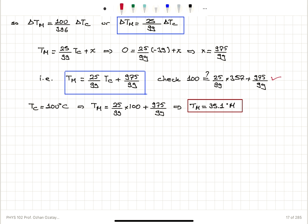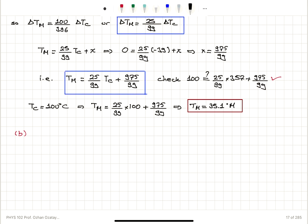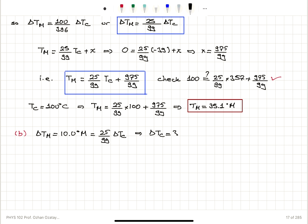For Part B, we want to know what temperature change of 10 degrees M corresponds to in degrees Celsius. Using the temperature change conversion, delta T_M of 10.0 degrees M equals (25/99) times delta T_C. Solving for delta T_C gives 39.6 degrees Celsius.